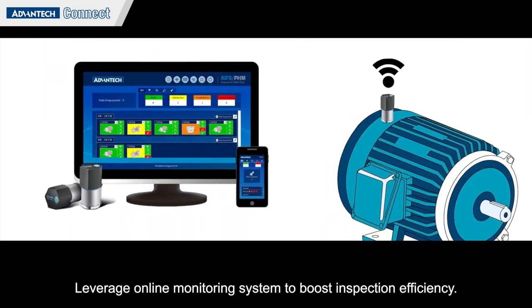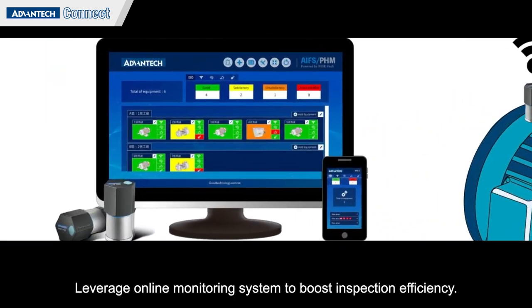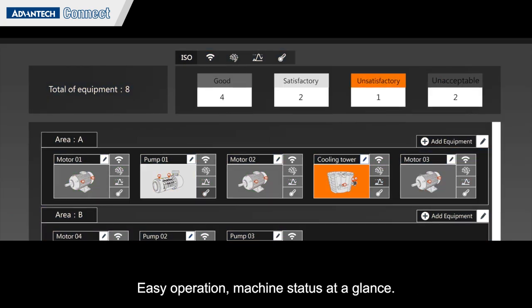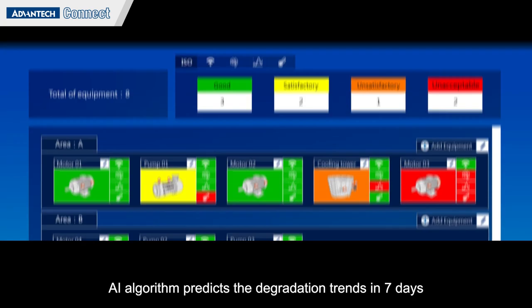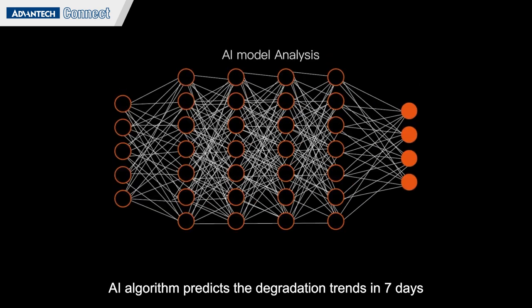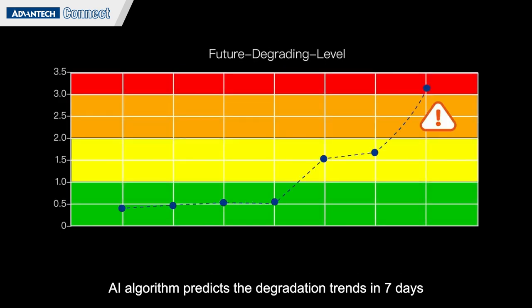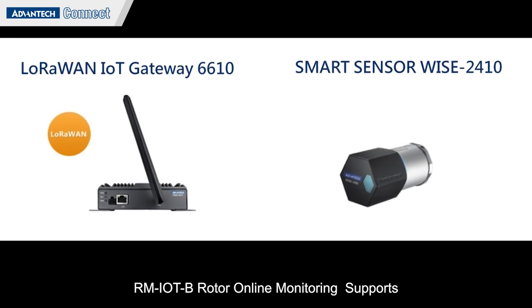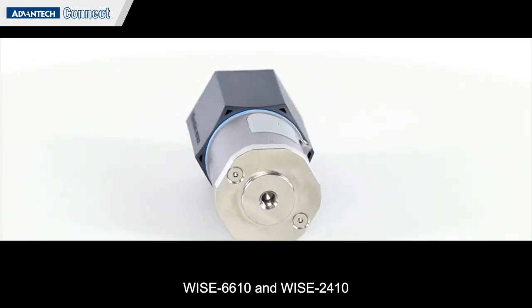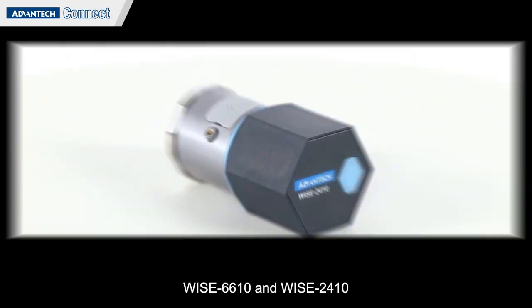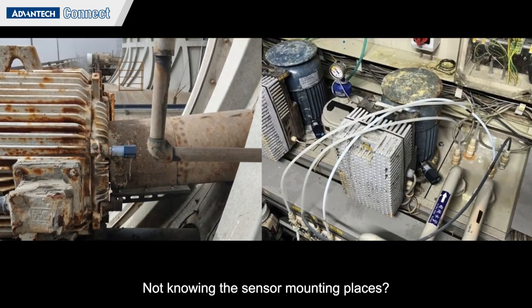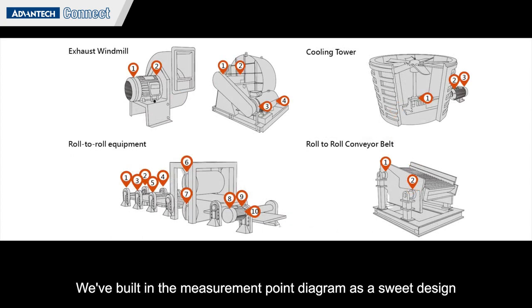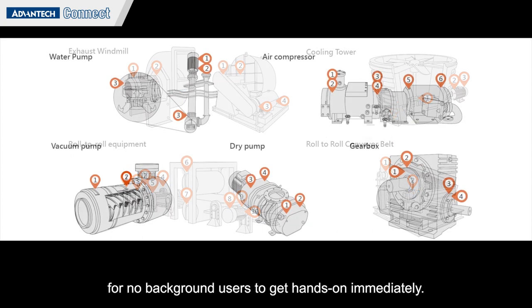This applies to all kinds of rotors. Leverage an online monitoring system to boost inspection efficiency — easy operation, machine status at a glance. An AI algorithm predicts degradation trends in seven days. RMIOTB Rotor Online Monitoring supports WISE 6610 and WISE 2410. A built-in measurement point diagram is designed as a suite for new users to get hands-on immediately.